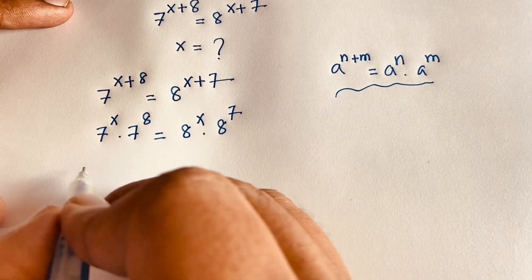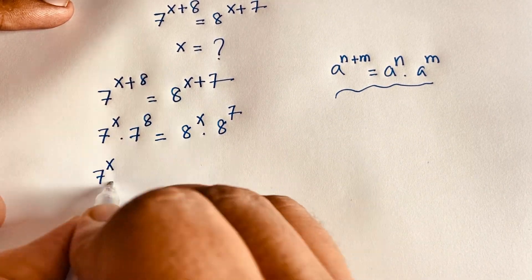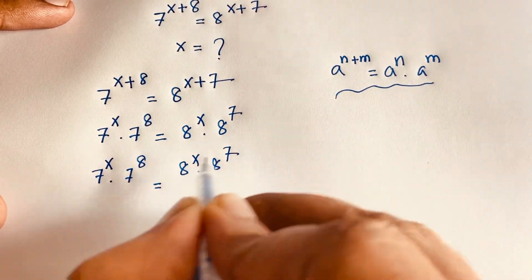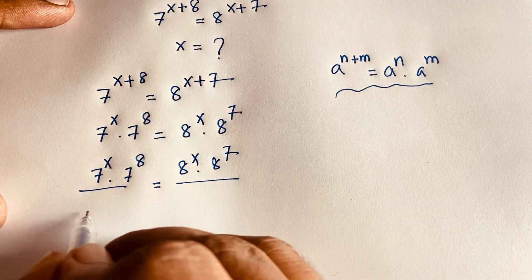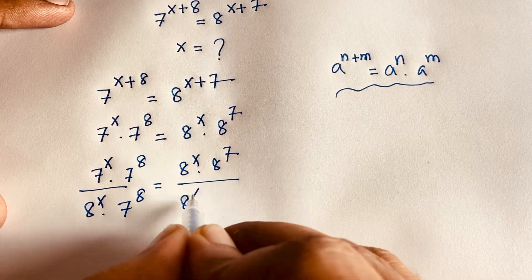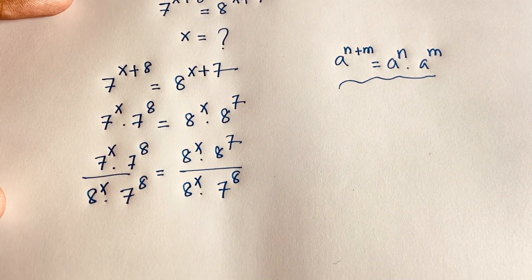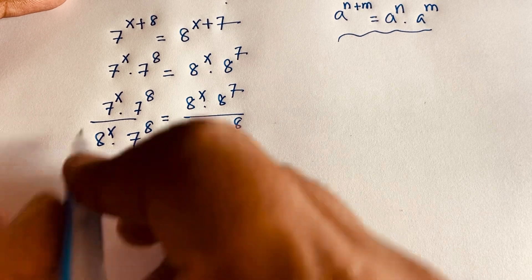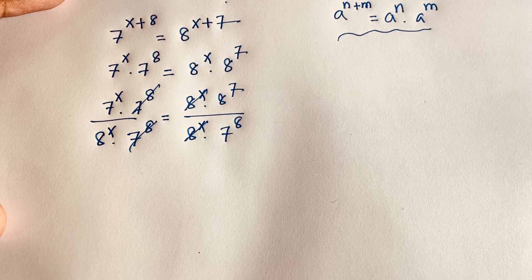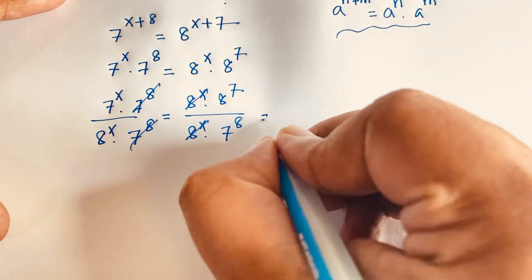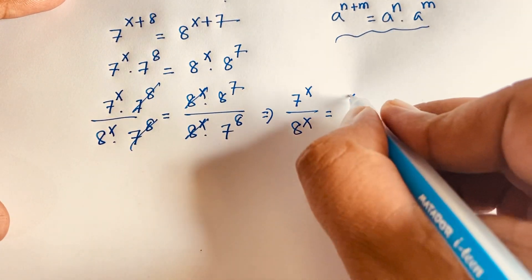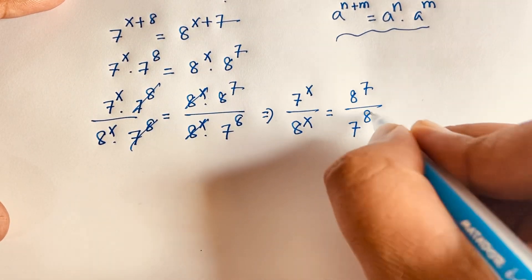Then I can see easily our equation is 7 to the power x times 7 to the power 8 equals 8 to the power x times 8 to the power 7. I divide both sides by 8 to the power x times 7 to the power 8. The 8 to the power x terms cancel and the 7 to the power 8 terms cancel. So we find that 7 to the power x over 8 to the power x is equal to 8 to the power 7 over 7 to the power 8.